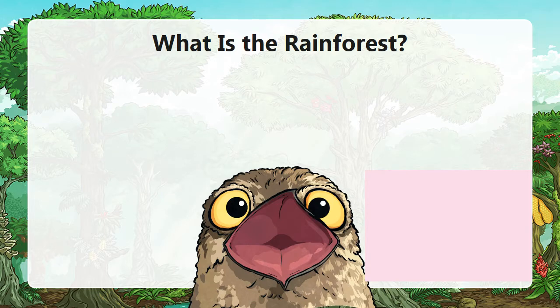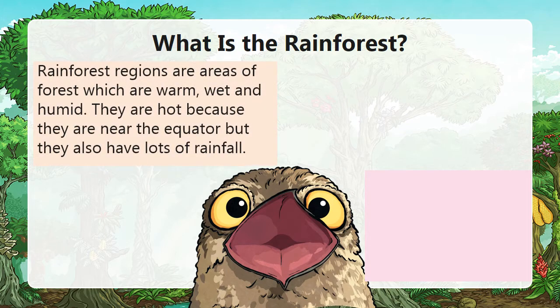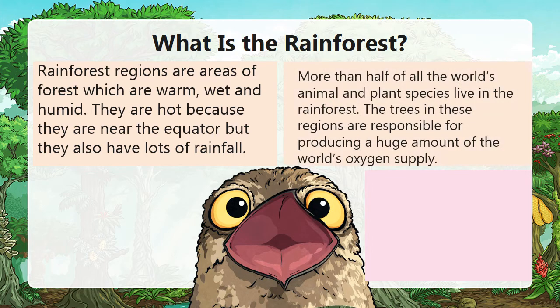What is the rainforest? Rainforest regions are areas of forests which are warm, wet and humid. They are hot because they are near the equator, but they also have lots of rainfall. More than half of the world's animal and plant species live in the forest. The trees in these regions are responsible for producing a huge amount of the world's oxygen supply.